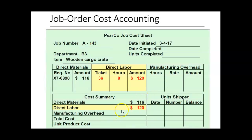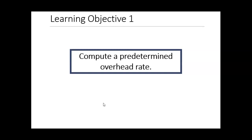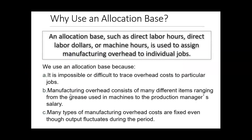We're now going to assign direct labor costs to job A-143. It's pretty straightforward to assign direct material and direct labor costs since those amounts are specific. However, when it comes to manufacturing overhead, we first need to determine what's called a predetermined overhead rate. We need to determine how much of the indirect labor, indirect material, and other manufacturing costs to assign to each individual job.